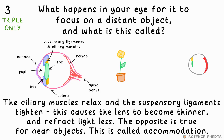This is called accommodation. To focus on far objects, the ciliary muscles relax, the suspensory ligaments tighten, and these cause the lens to become thinner, so light refracts less, focusing it on the retina. The opposite is of course true for when focusing on near objects.